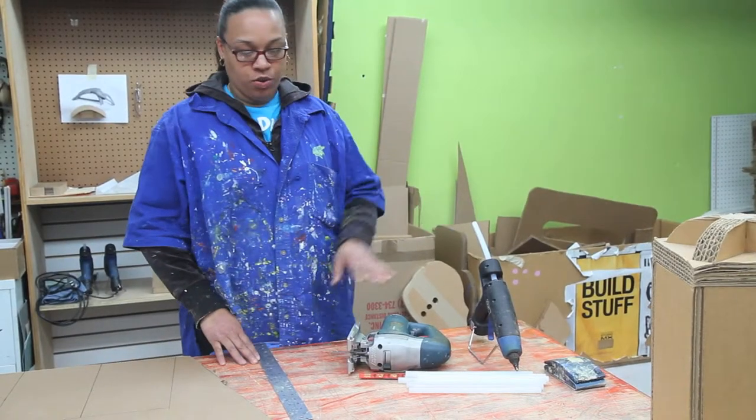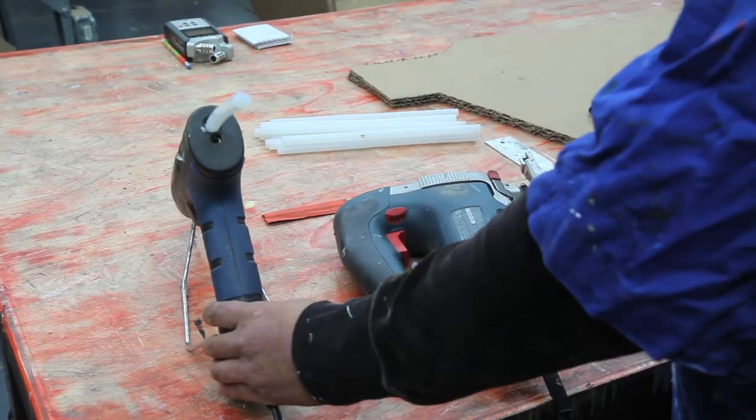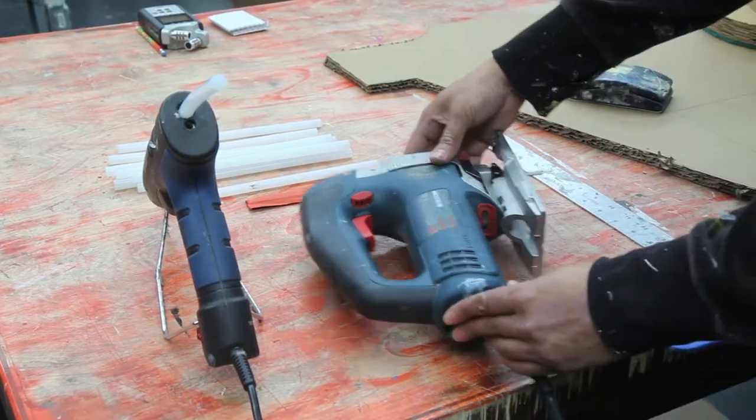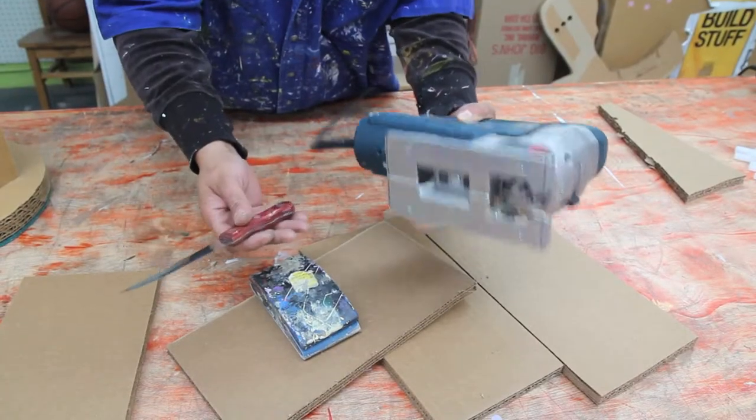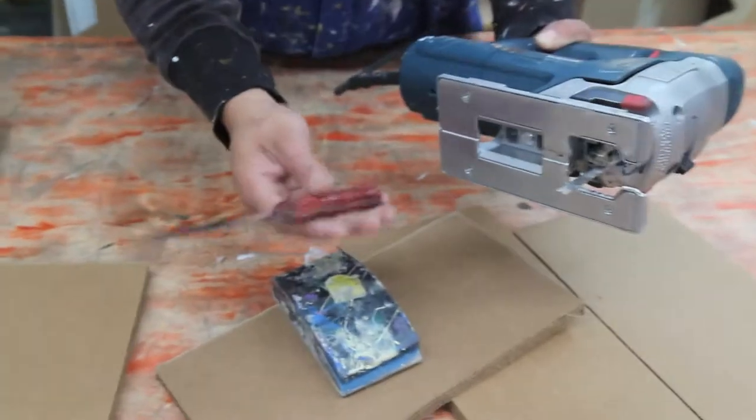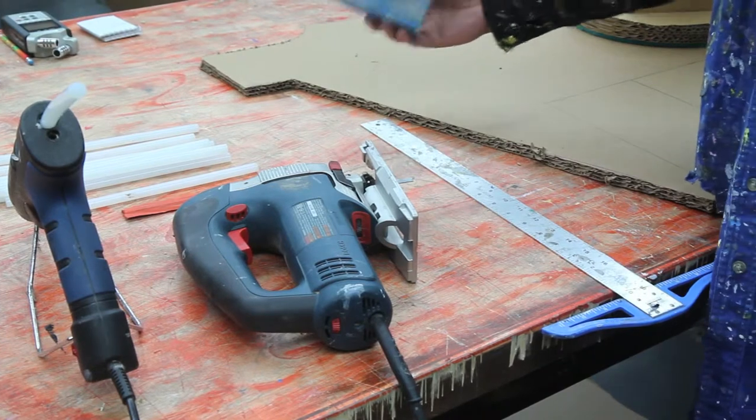So these are the tools that we're going to be using today. This is a glue gun with a glue stick, a chopstick, a jigsaw. If you don't have this, you could use this. This, you will find it in your kitchen. A t-square and some sanding paper.